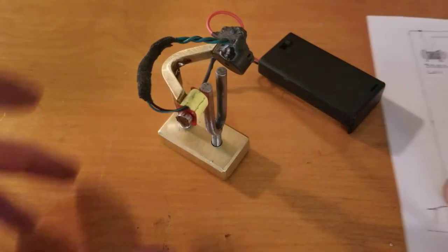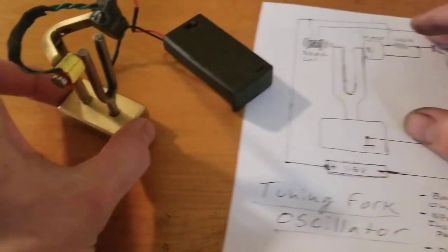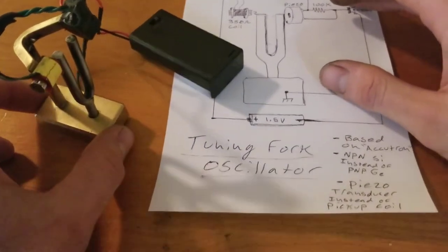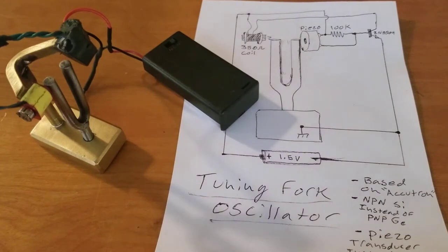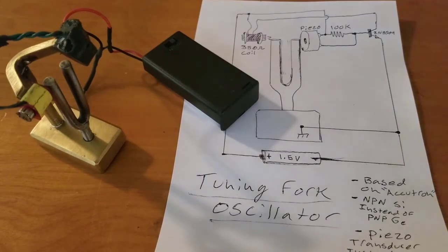And this is the schematic. Make sure I got that on camera. It's based on the Accutron watch, the electromagnetic tuning fork movements for a watch. The only difference is the modern transistor and the piezo substitution, which I already talked about.